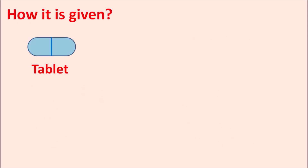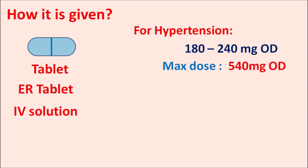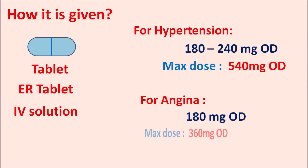Dosing: Diltiazem is available as tablets, extended-release tablets, and IV solution. For hypertension, initial dose is 180–240 mg once daily; maximum dose is 540 mg once daily. For angina, the dose is reduced — initial dose 180 mg once daily, maximum 360 mg once daily — because higher doses can reduce cardiac contraction and AV conduction, which may increase the risk of heart block, which is fatal.